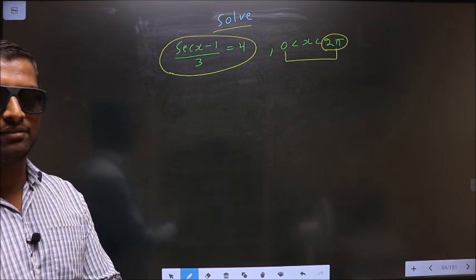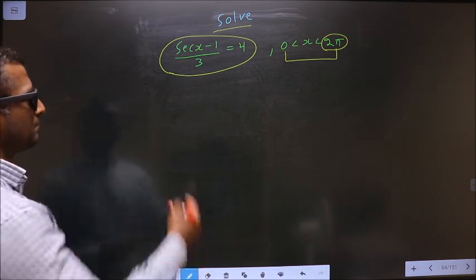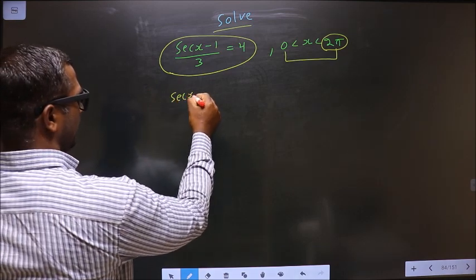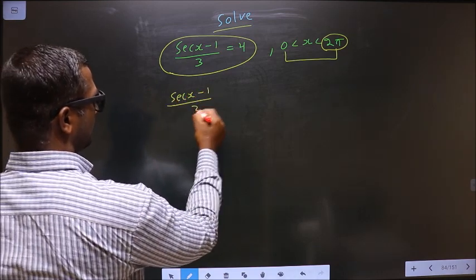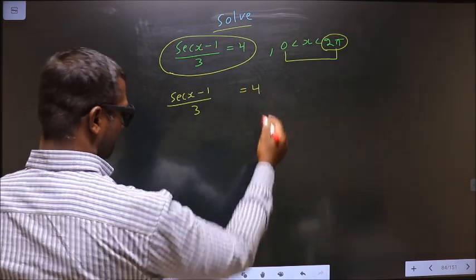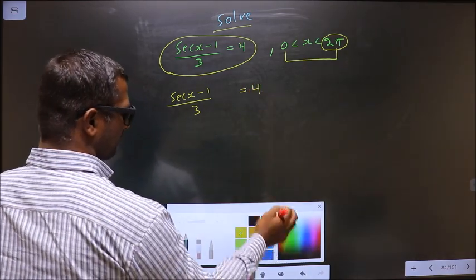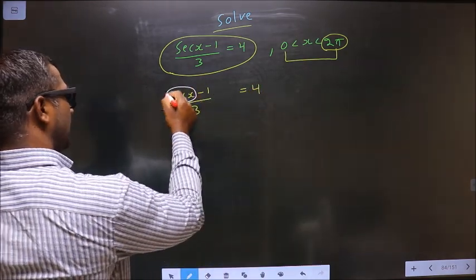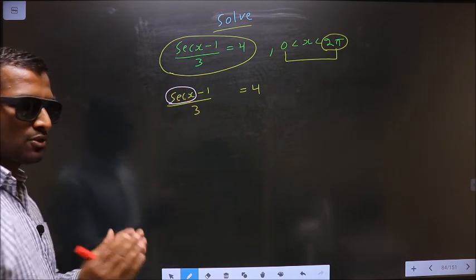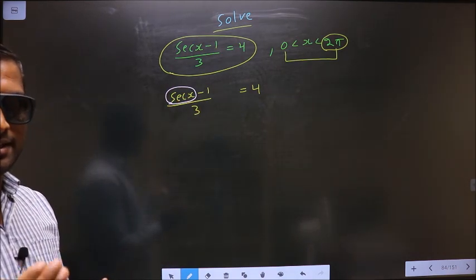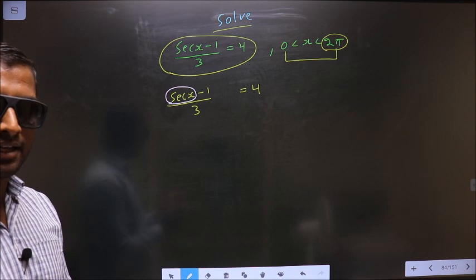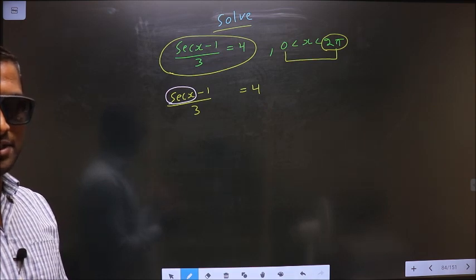Now the given equation is secant x minus 1 by 3 equal to 4. Here you have secant x, so you make secant x the subject.